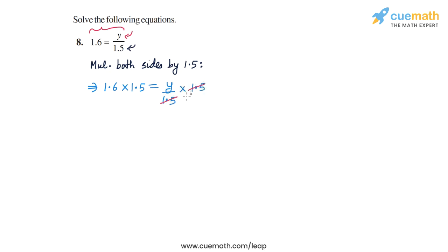On the RHS, these two terms cancel out and we are left with only y. So we get 1.6 into 1.5, that's 2.4, and on the RHS we are left with only y.